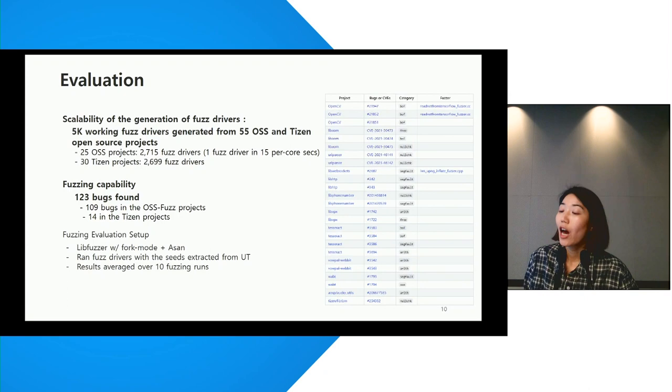To evaluate how many UT-based projects can be automatically converted by Utopia, we selected 55 popular open source code. Utopia generated 5K working fuzz drivers from the project without human intervention. As a result, we found 123 bugs.